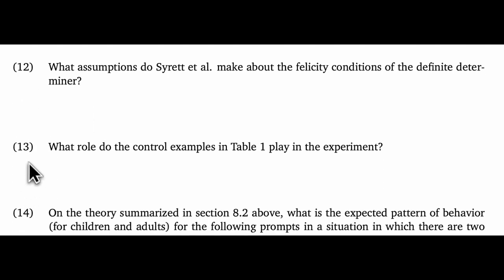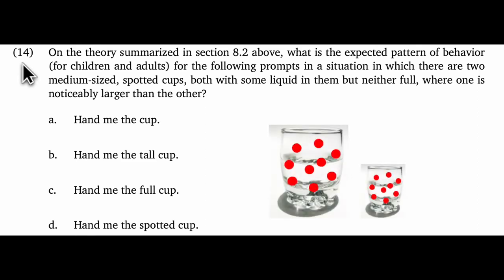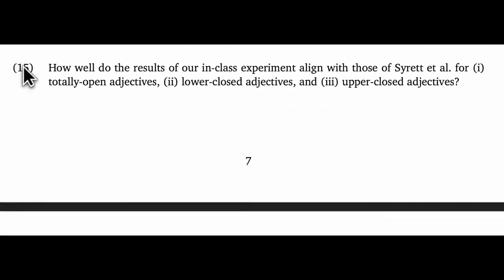Next, what role do the control examples in Table 1 play in the experiment? That's a good experimental detail to track. And then we get to brass tacks. On the theory summarized above, what is the expected pattern of behavior for children and adults for the following prompts in a situation in which there are two medium-sized cups spotted, both with some liquid in them, but neither full, where one is noticeably larger than the other? So we have hand me the cup, hand me the tall cup, hand me the full cup, hand me the spotted cup. Make sure you know what the predictions are for each one of those cases. And finally, I'm about to provide a partial answer to this final question here. How well do the results of our in-class experiment align with those of Syrett et al. for totally open adjectives, lower-closed adjectives, and upper-closed adjectives? So let's turn to that question to round out this discussion.